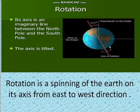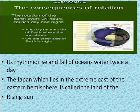The axis is tilted — it is slightly sloping. Rotation is the spinning of the earth on its axis from the east-west direction.